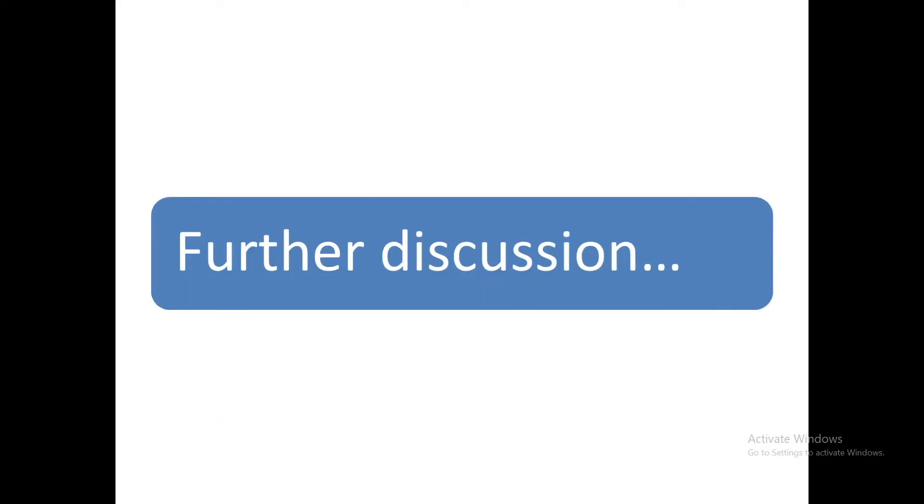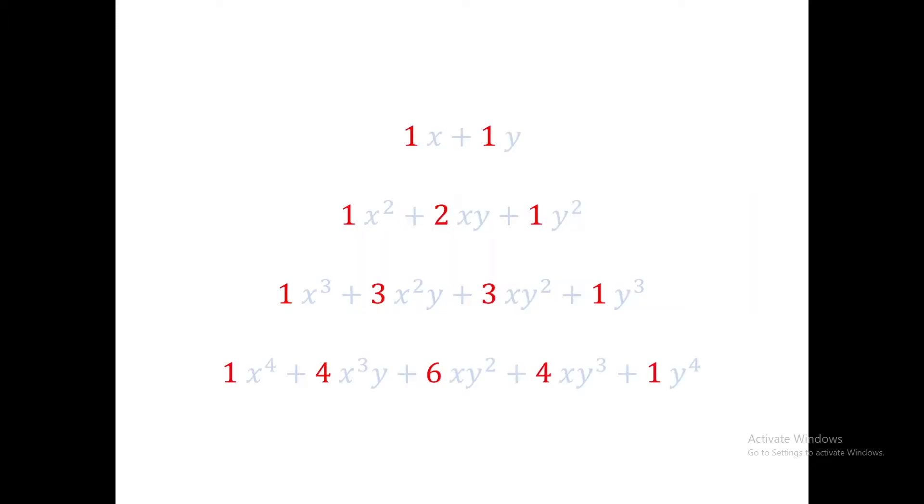After these observations, we now discuss the relation between binomial coefficients and Pascal triangle. Binomial coefficients are shown in red in different expressions. Let's try to pick any pattern that exists between these coefficients.